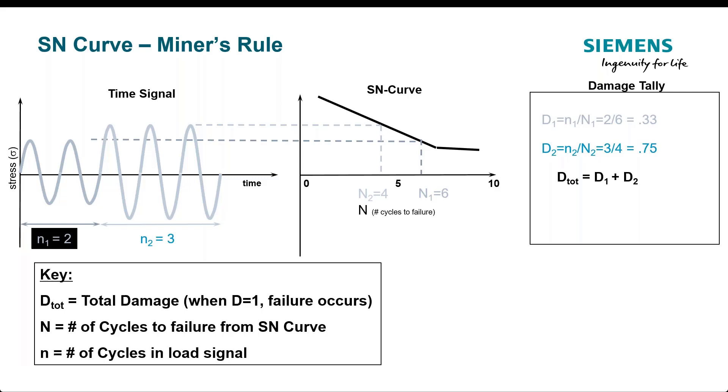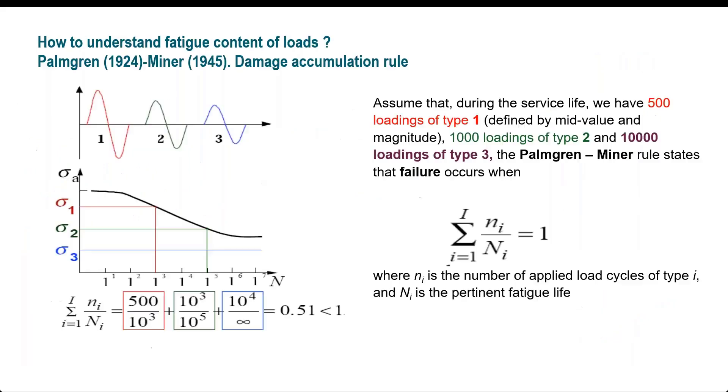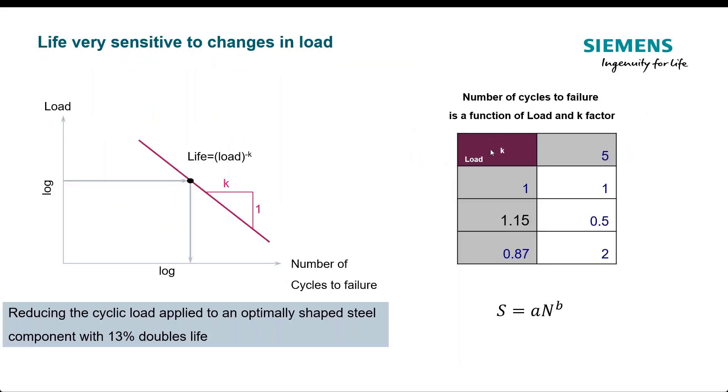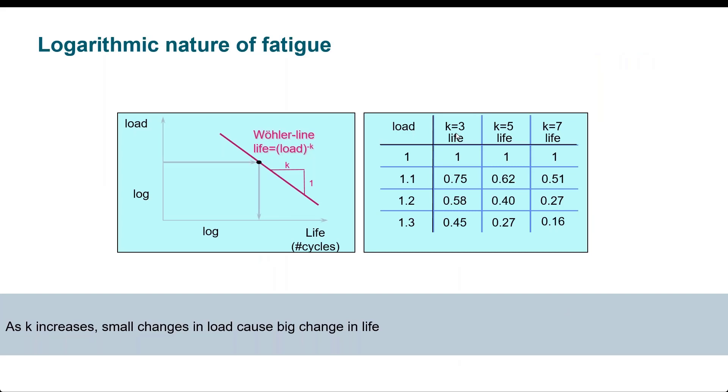Some people as a factor of safety, they maybe say, I'm going to make this damage sum not one, but 0.9 or something. But this is the basic theory. This is how we do damage. Here's a more of a mathematical expression and probably give credit to credit due. It's called Palmgren-Miner's rule, but a lot of times we just see Miner's rule. Now, just to let you know, K, so K is that number that's like the B in the other one. So, K of five, and I have a 15% change in a load, I reduce my life by 50%. So, reducing the cyclic loading applied to an optimal shaped steel component with 13% doubles the life. And that's this formulation. You can see it as a function of K. So, as that line gets flatter, the load has a bigger effect.